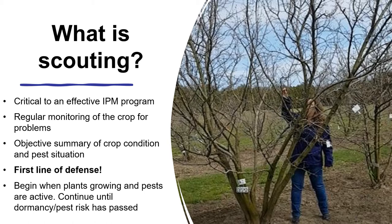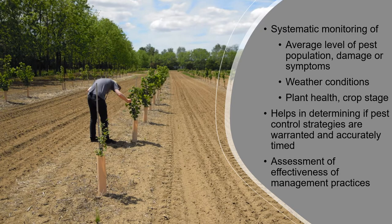You begin scouting when the plants are growing and the pests are active, and you want to continue until the trees are dormant or the risk of the pest has passed. It's the systematic monitoring of the average level of the pest in the orchard — or its damage or other symptoms if it's a disease. It also involves noting the weather conditions, plant health, and crop growth stage, which influence the plant's ability to withstand pests and your need to manage them.